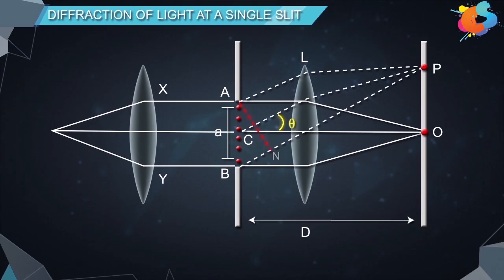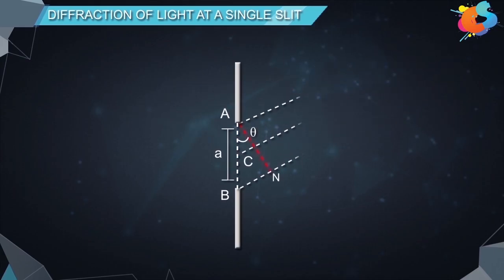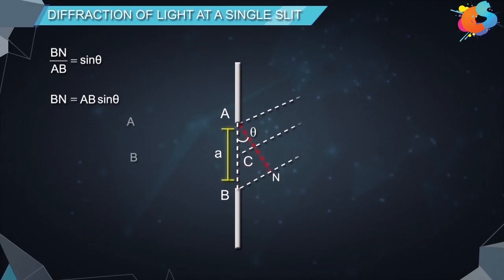To find the path difference, we draw a perpendicular AN from point A to the ray diffracted from B. The distance BN gives the path difference between the secondary waves from A and B reaching point P. From triangle ANB, BN divided by AB equals sin theta, so BN equals AB sin theta. Since AB is the slit width equal to a, and BN is the path difference, therefore the path difference is equal to a sin theta.